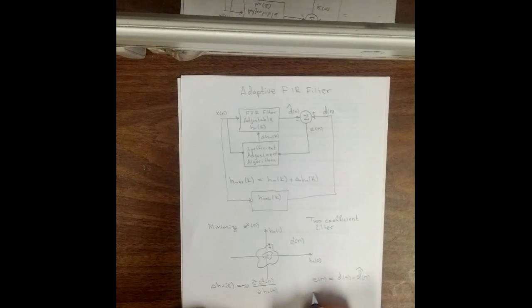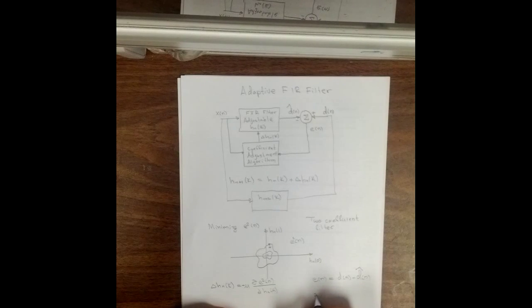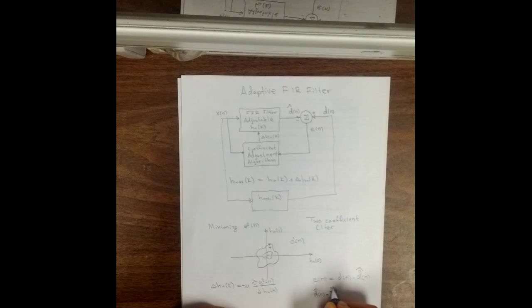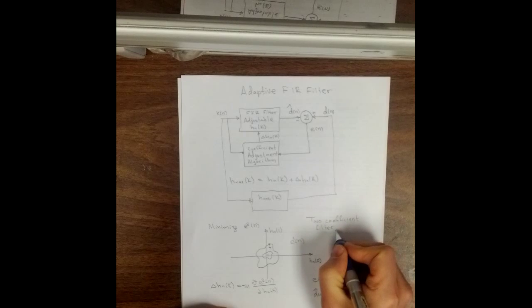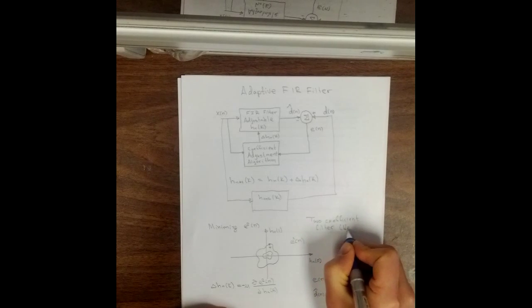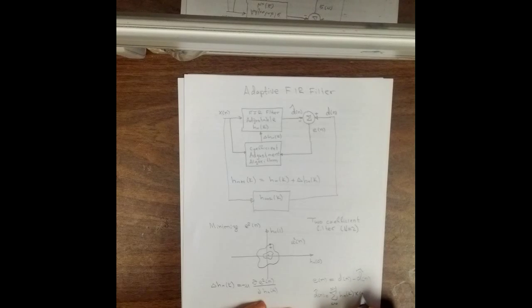And d hat is just the convolution between the input xn and the h sub n of k. So d hat of n will equal the summation from k equals zero up to n minus one, where n is the number of coefficients. So this is n equals two basically for our case. So we'd go from k equals zero and k equals one, that's this direction and that direction. Then we want to do the convolution and the convolution is just h sub n of k multiplied by x of n minus k.